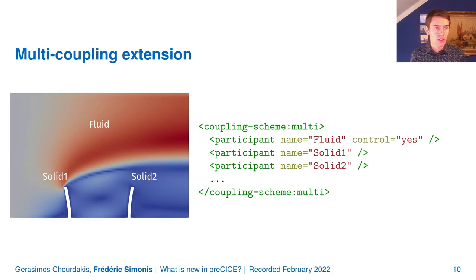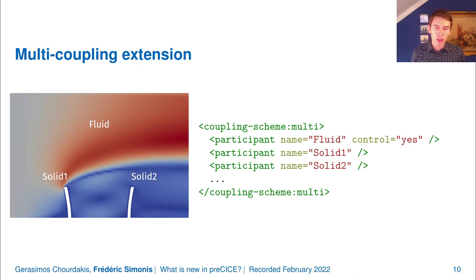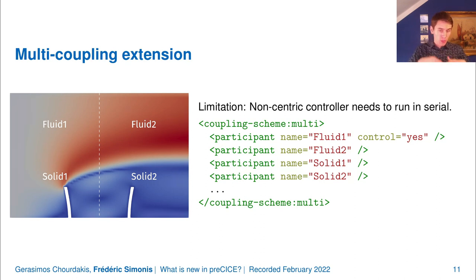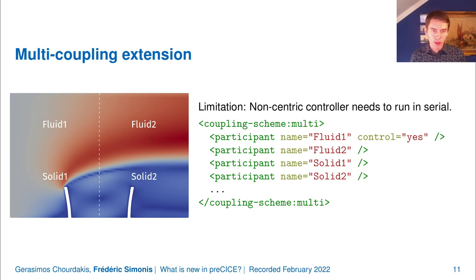Another interesting extension is the multi-coupling extension. In the tutorial case of multiple perpendicular flaps in a channel, a single fluid participant is the controller of the multi-coupling scheme, seeing both solid 1 and solid 2. This was extended so you can now split the channel into two fluid participants without a centric participant. You can use a multi-coupling scheme with, for example, fluid 1 as the controller. The only limitation is that a non-centric controller must run in serial, though we aim to remove this limitation.